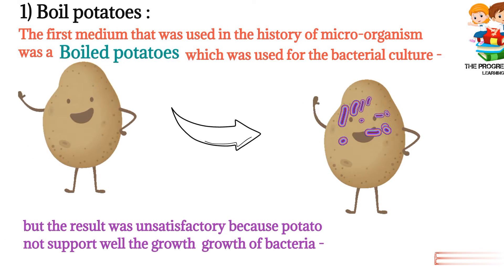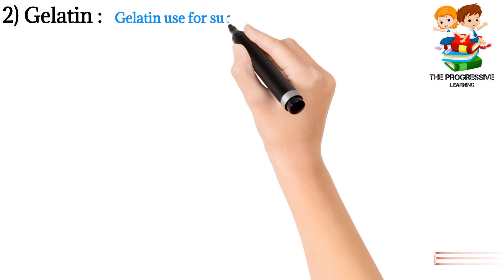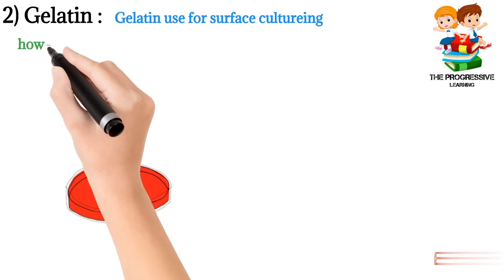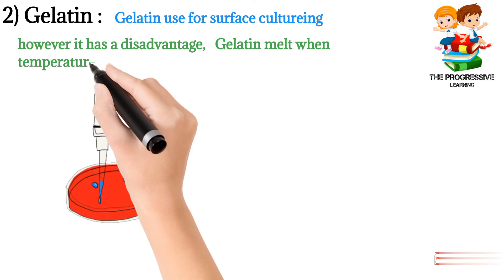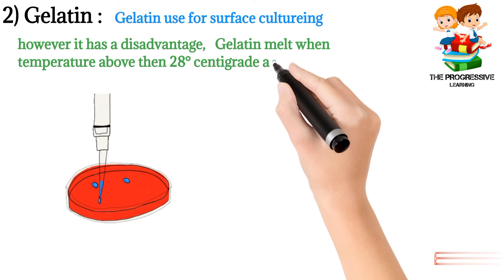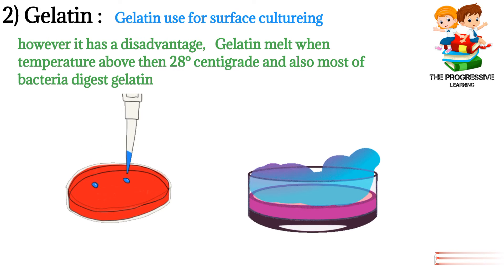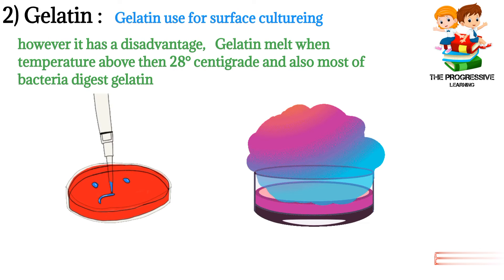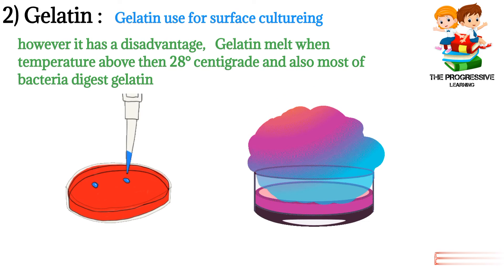Therefore, a separate medium was used that is known as gelatin. Gelatin is used for surface culturing. However, it had a disadvantage because gelatin melts when the temperature is above 28 degrees centigrade, and also most of the bacteria digest gelatin. So gelatin is not considered the best medium for the growth of bacteria.